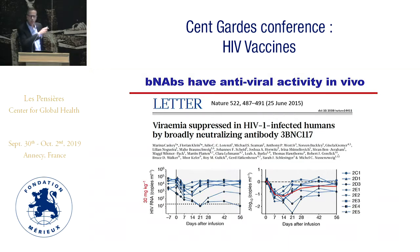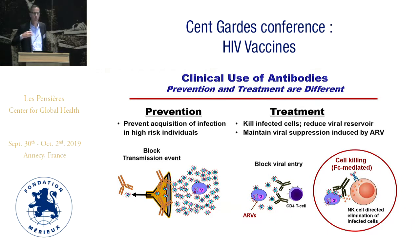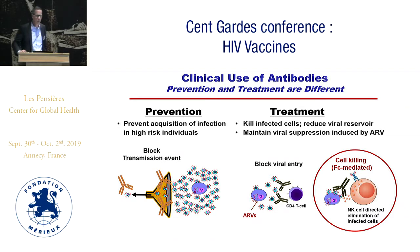Despite the fact that we know there's an antiviral effect, we don't know if this is all mediated by neutralization, because everyone likes to talk about ADCC and the fact that broadly neutralizing antibodies, if you put them into an ADCC assay in vitro, they will mediate ADCC. And so the question becomes, is this mechanism somewhat operative in the antiviral effect that we see in viremic individuals?